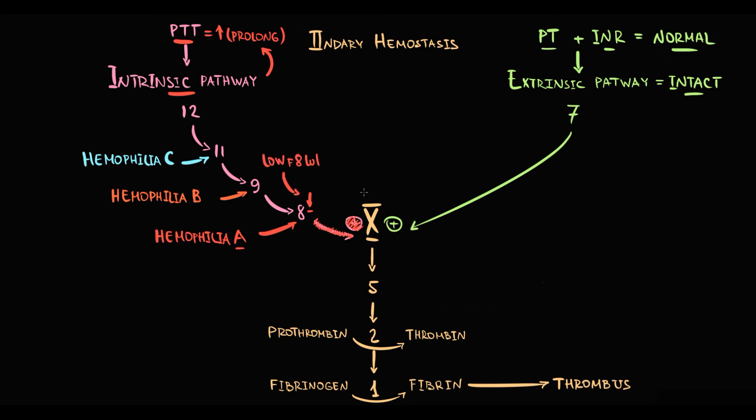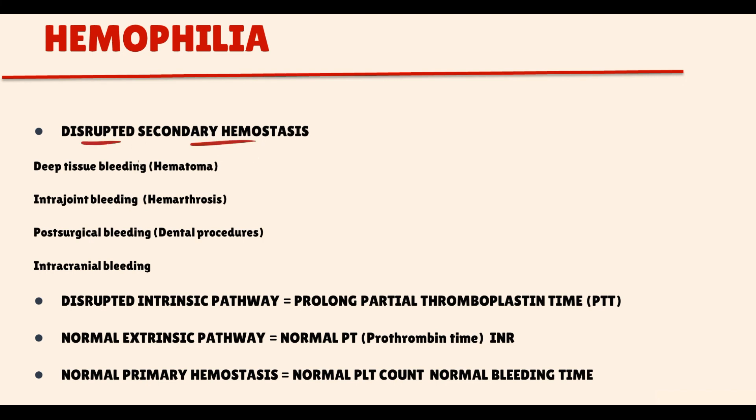The disruption of the secondary hemostasis manifests with deep tissue bleeding, also called hematoma type of bleeding. Also hemophilia patients after the trauma frequently have intra-joint bleeding, so-called hemarthrosis. And also they have post-surgical bleeding, especially after the dental procedures. The most common cause of death due to hemophilia is related to intracranial bleeding, which is really life-threatening complication.